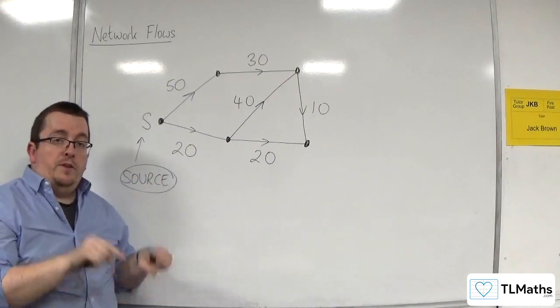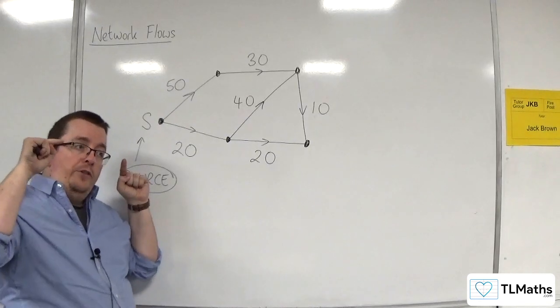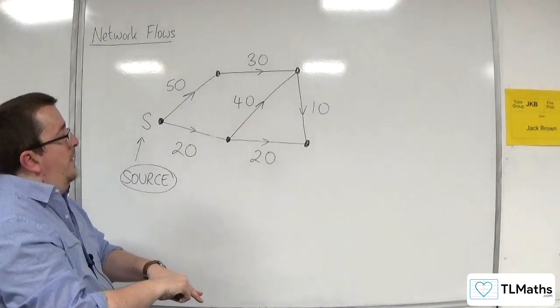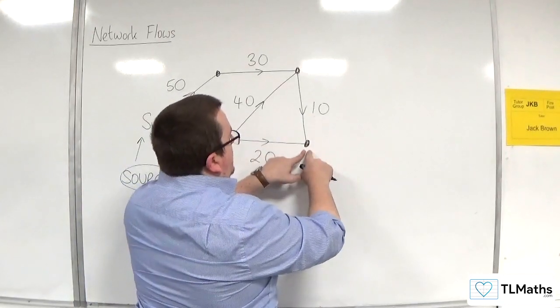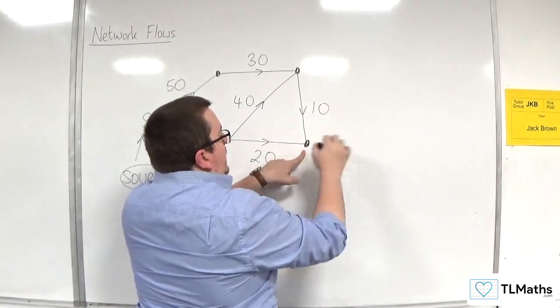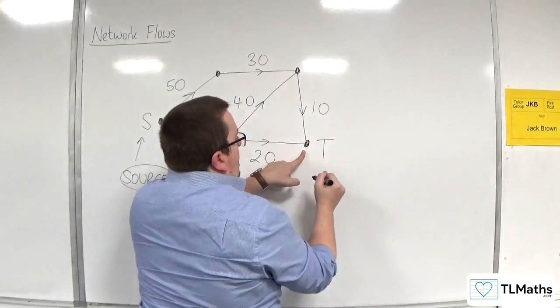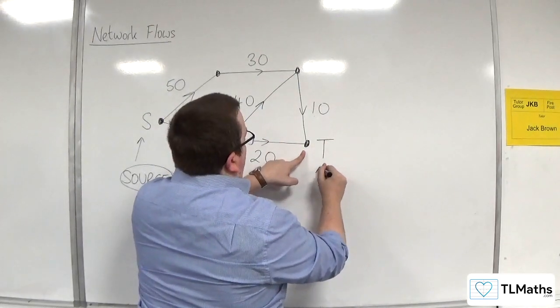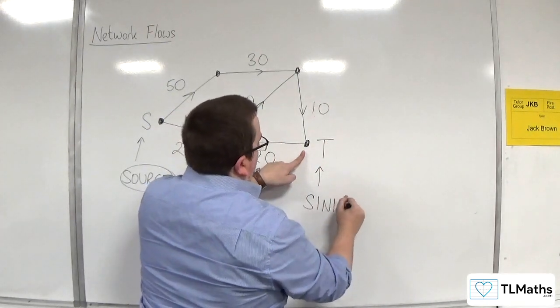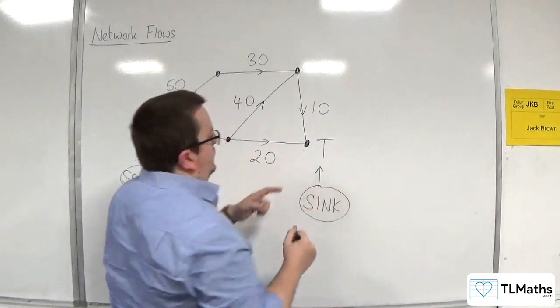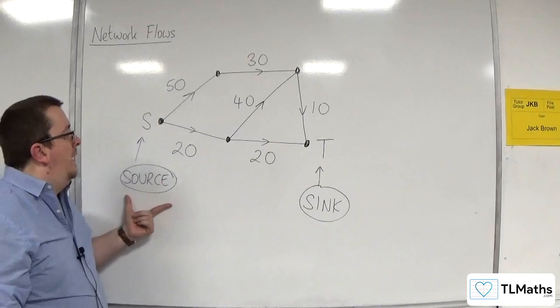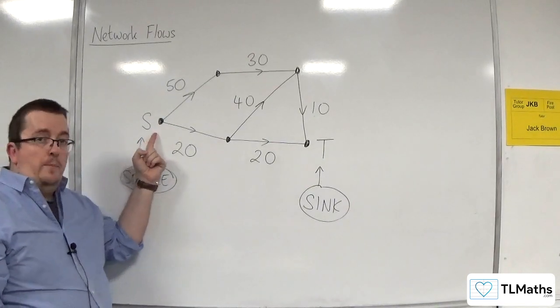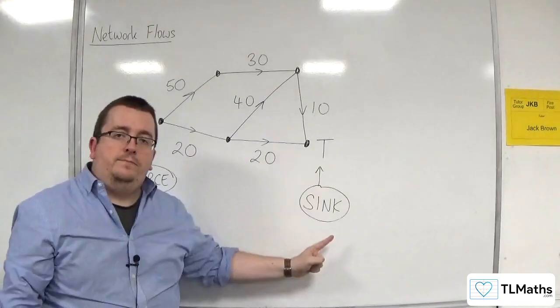If there is a node, or there should be a node, where all of the arrows are going into it, and none coming out, then that one, we refer to that as the sink. And we usually label that as a T. So this is the sink. So you can kind of think of this as, you know, that's the tap and that's the plug hole, for example.